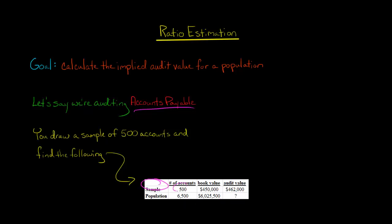You draw a sample of 500 accounts, and the book value per the company is 450,000, but you find the audit value is 462,000. And the question is, how do we extrapolate what we found to the population's audit value? What should be the audit value for the entire population, all 6,500 accounts?